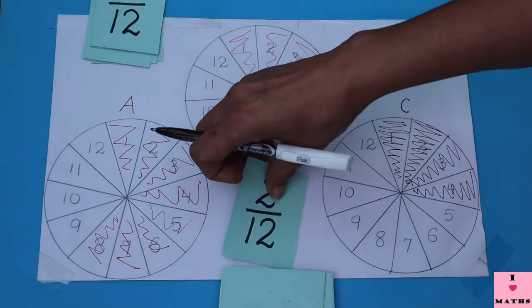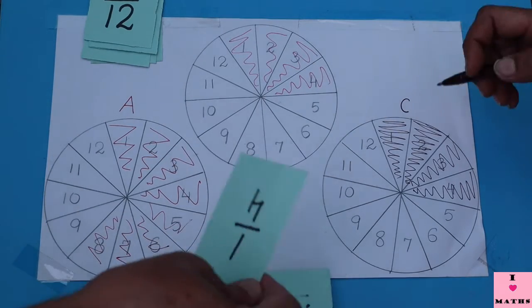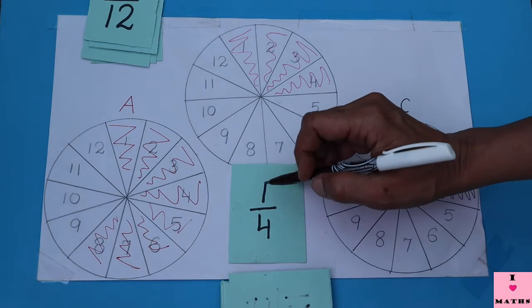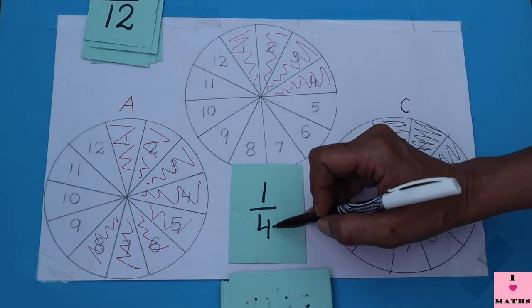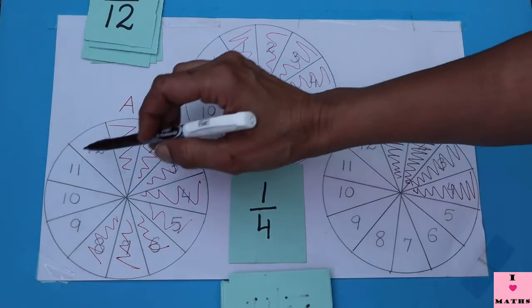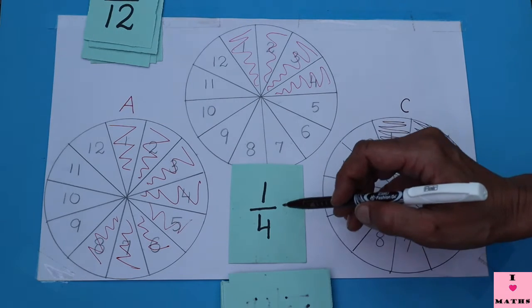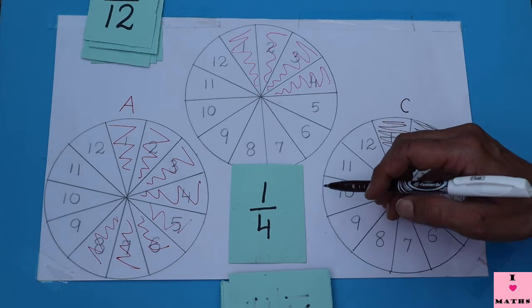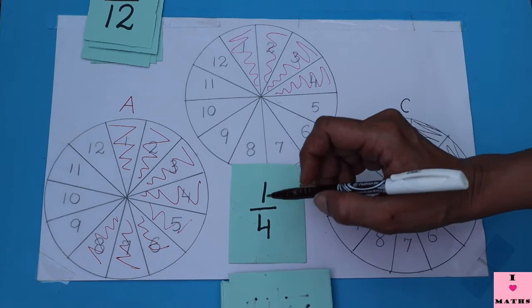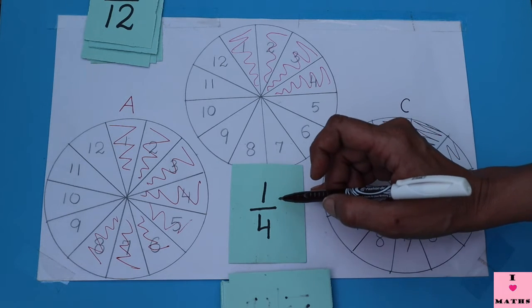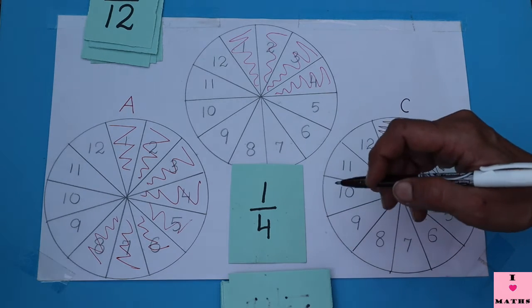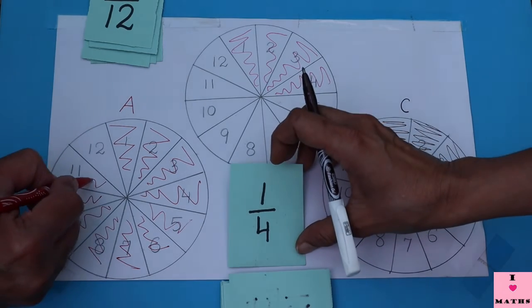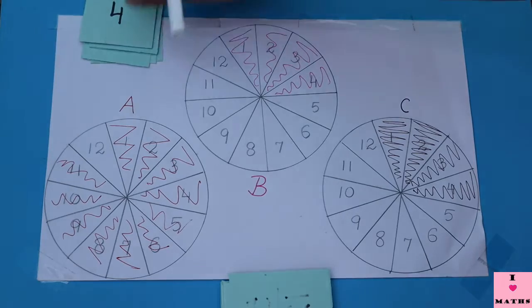Again A's turn. It seems A is going to win. Let's see. One out of four. Now children, one out of four means there are twelve total parts. Four threes are twelve, so it means three parts have to be colored to make it one upon four. Only one part left. Oh my god.